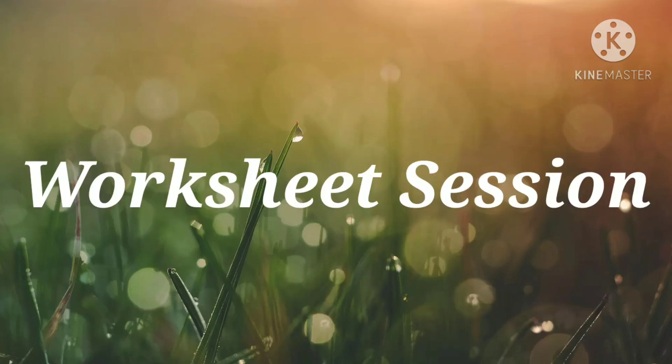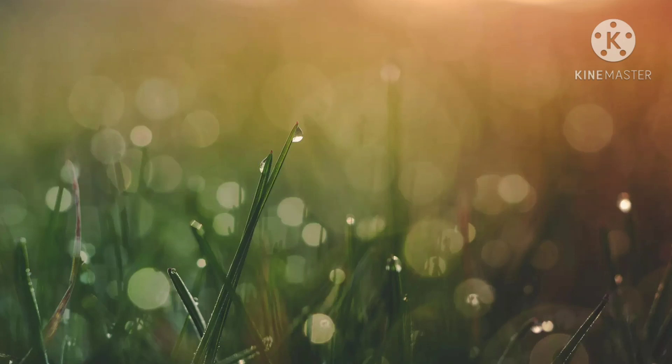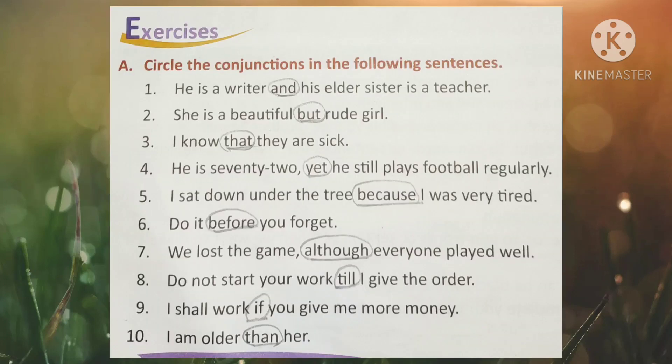Let's start our worksheet session now. Children, in the very first exercise, we have to circle the conjunctions in the following sentences. First one: he is a writer and his elder sister is a teacher. Here, the conjunction is 'and', which is used to join the two sentences. Second one: she is beautiful but rude. Here, 'but' is used as a conjunction to show the opposite idea.